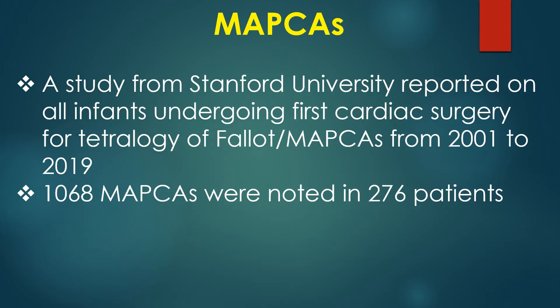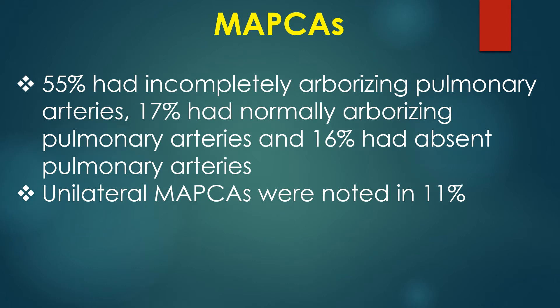A study from Stanford University reported on all infants undergoing first cardiac surgery for tetralogy of Fallot with MAPCAS from 2001 to 2019. 1,068 MAPCAS were noted in 276 patients. 55 percent had incompletely arborizing pulmonary arteries, 17 percent had normally arborizing pulmonary arteries, 16 percent had absent pulmonary arteries, and unilateral MAPCAS were noted in 11 percent.